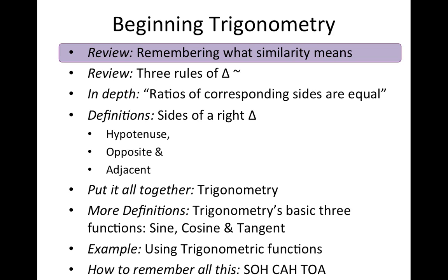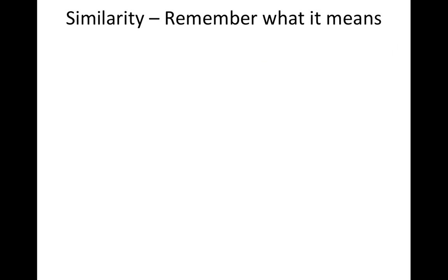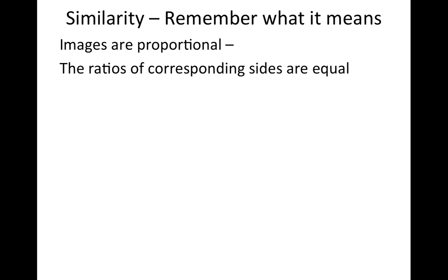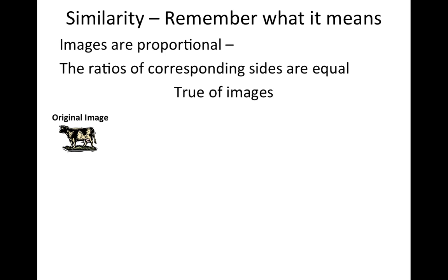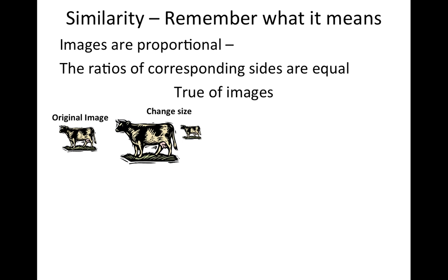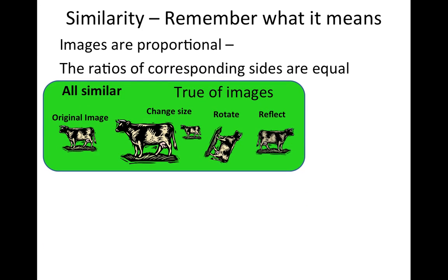So we're going to start with some review and remember what similarity means. Similarity means that images are proportional — the ratios of their sides are equal. Essentially, they're the same shape but don't have to be the same size. So if we start with an image of a cow, all of these images of the cow are similar — you can change the size, rotate it, or reflect it. Those are all similar.